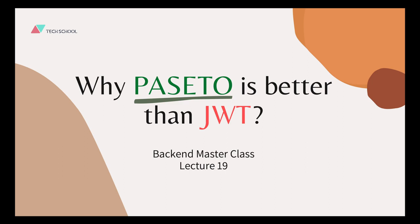Nowadays, token-based authentication has become more and more popular in the development of web and mobile applications. There are many different types of tokens, but among them, JSON Web Token or JWT is one of the most widely used. However, in the past few years, we have also discovered several security issues regarding JSON Web Token, mainly because of its poorly designed standard. So recently people have started migrating to other types of tokens such as PASETO, which promises to bring better security to the application. In this lecture, we will learn everything about the security issues of JWT and how PASETO is designed to solve all those problems.